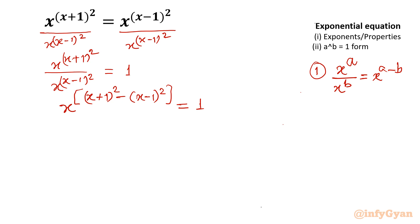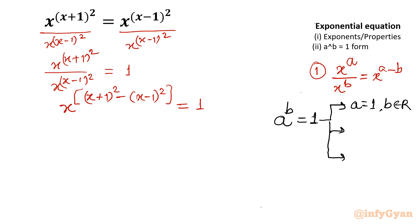Now we talk about the form a^b = 1. There are three cases. Case one: a = 1 and b belongs to real numbers. Case two: the exponent b = 0 and the base is non-zero — if base is also 0 it generates an indeterminate form. Case three: base equals -1 and its exponent belongs to even numbers, since (-1)^(even) always gives 1. We will calculate all three cases for this equation.